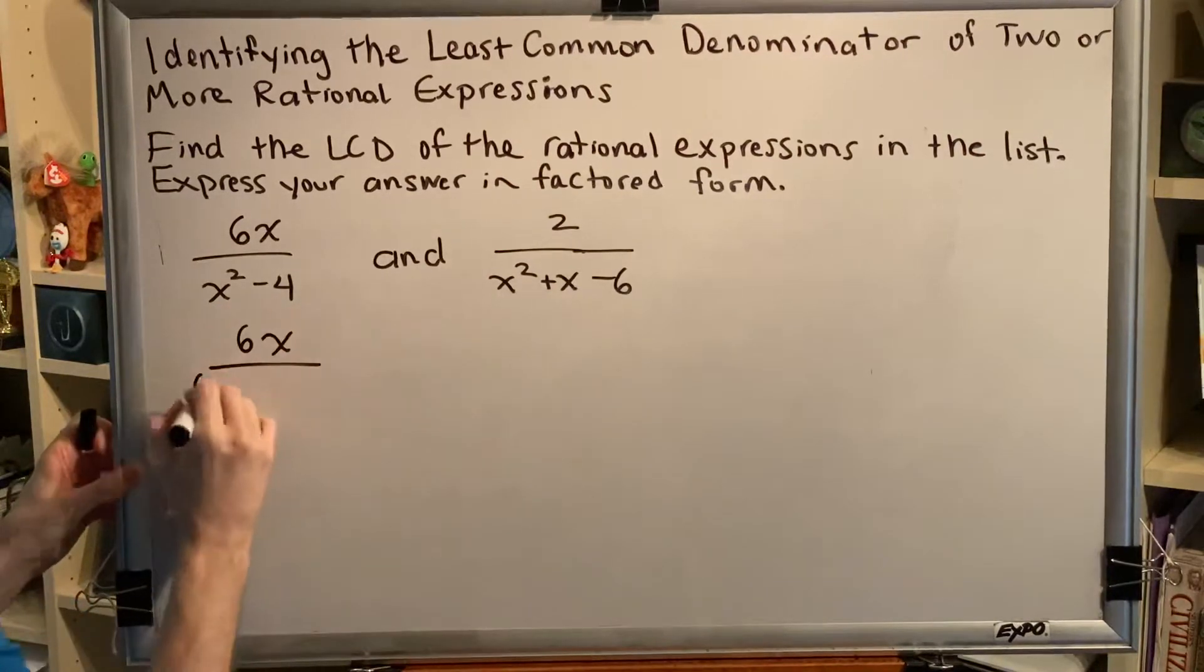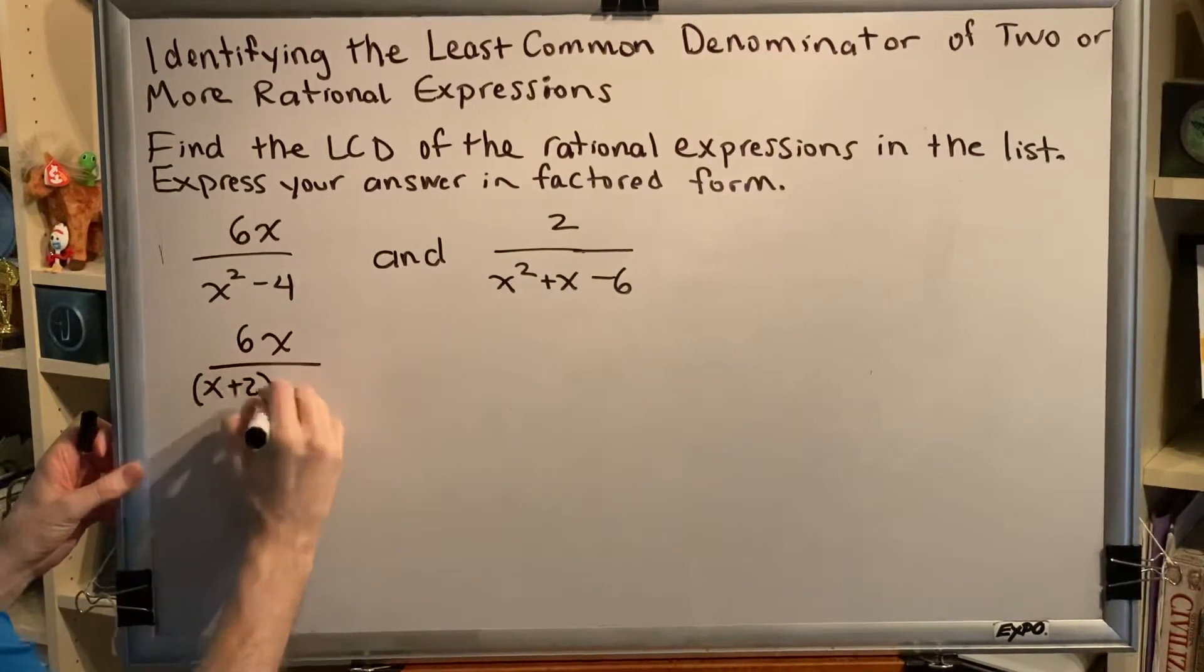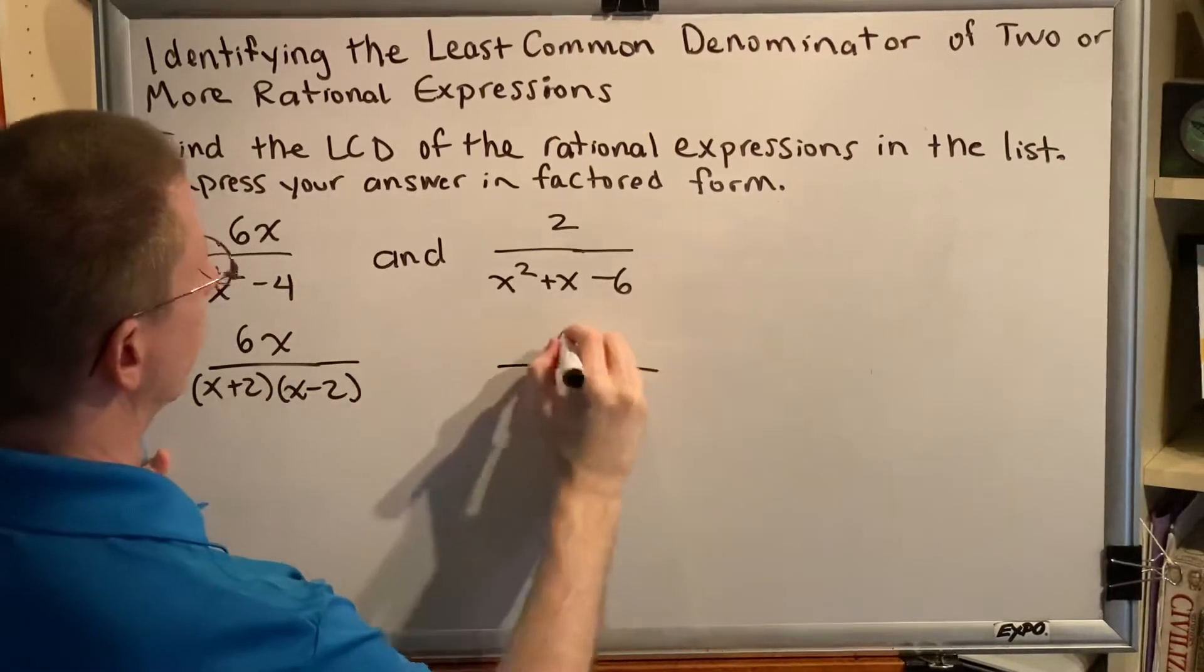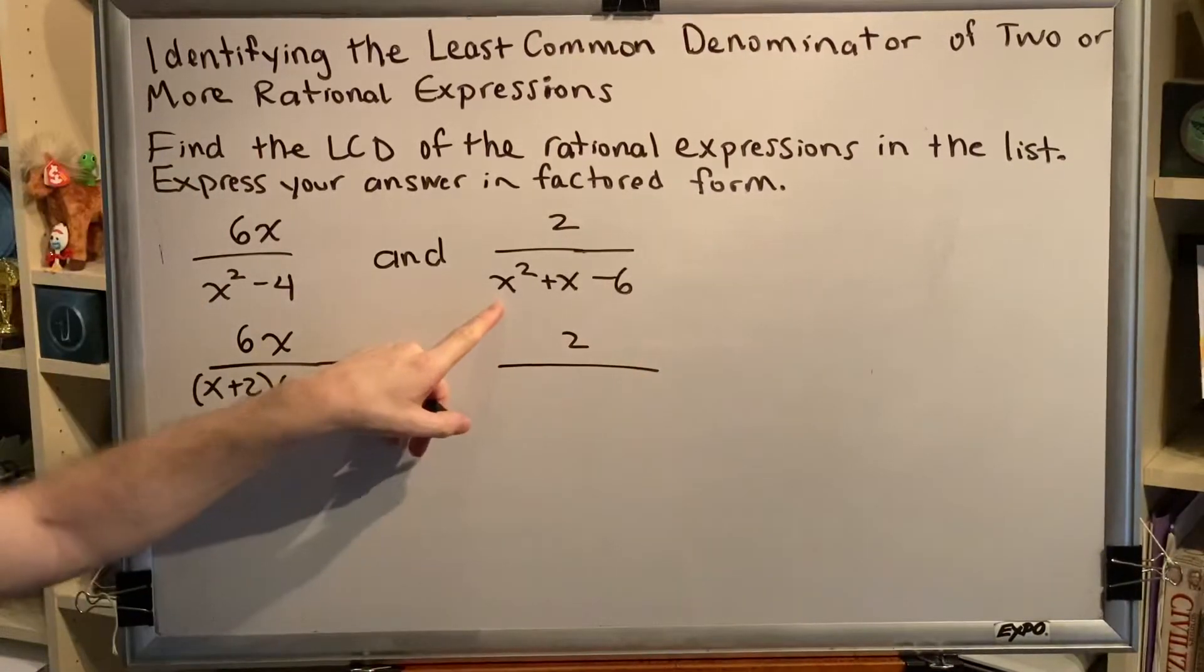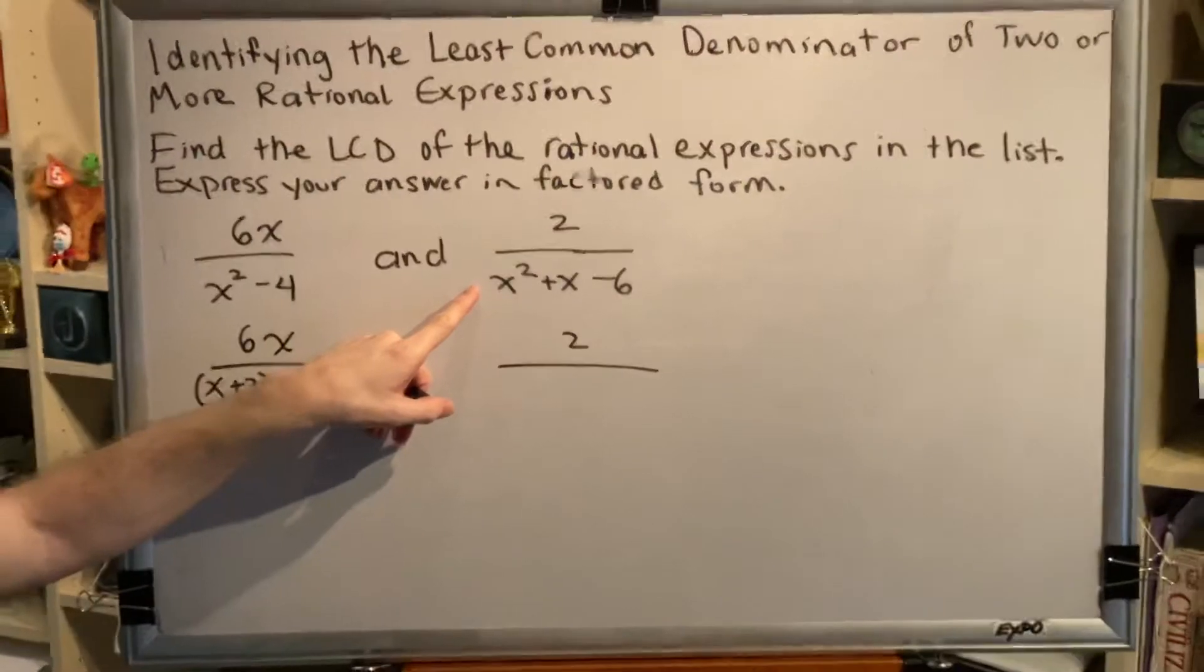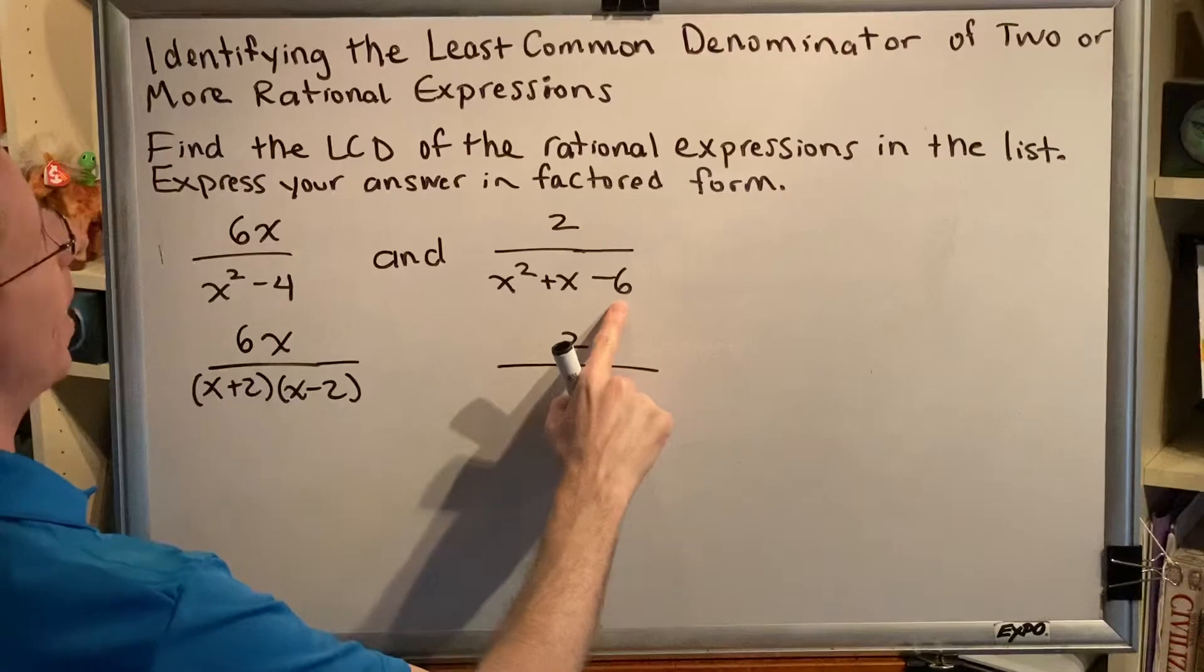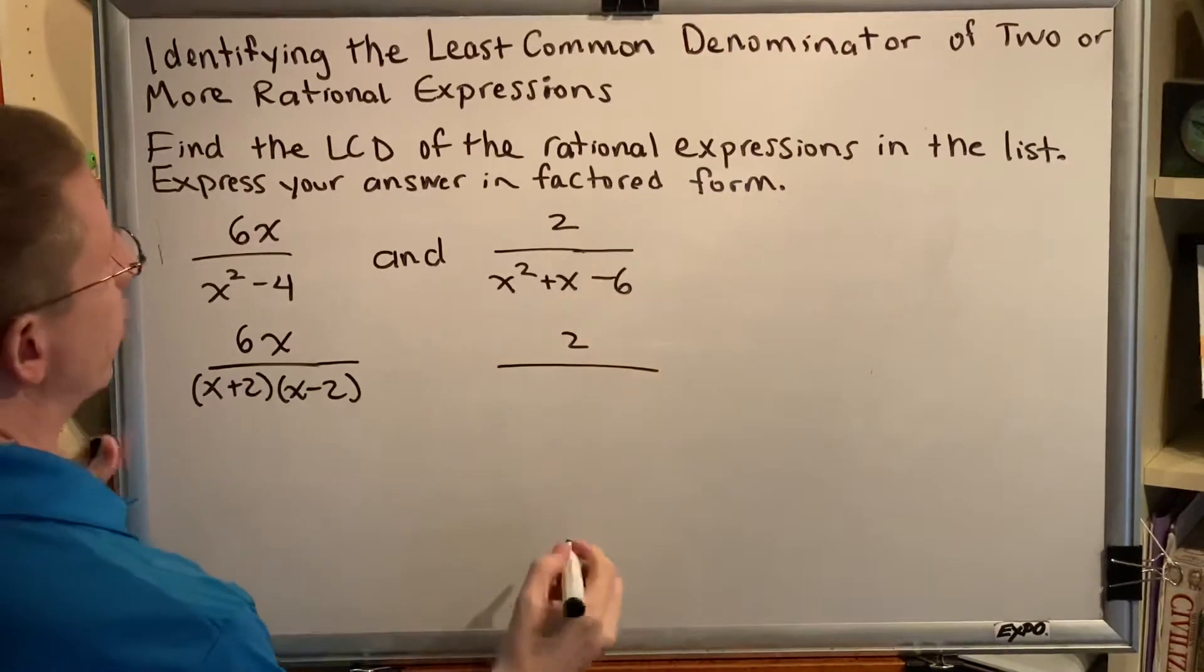So this is a difference of squares which factors as x plus 2 and x minus 2. This is a trinomial whose variable squared term has a coefficient of 1, which means this is a pretty easy one to factor. We just need two numbers that multiply to make negative 6 but add to make positive 1.